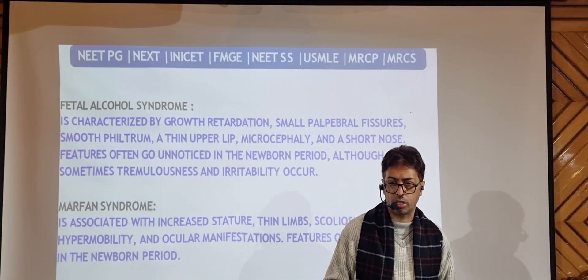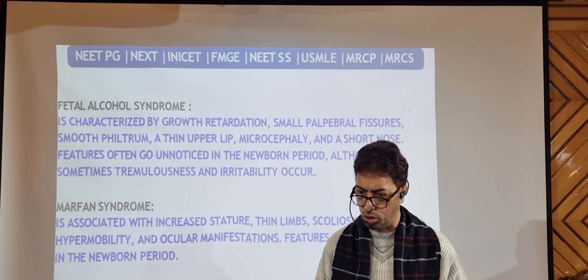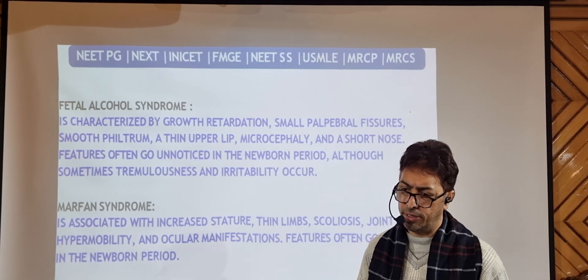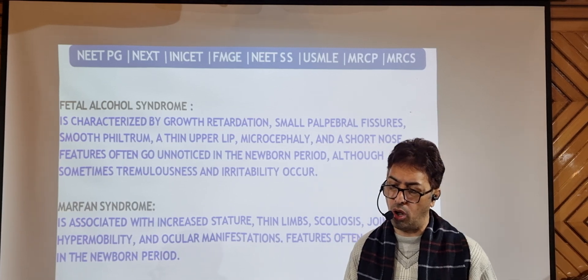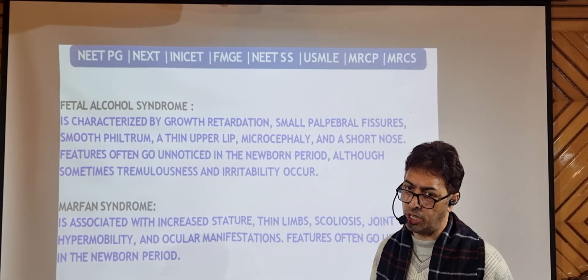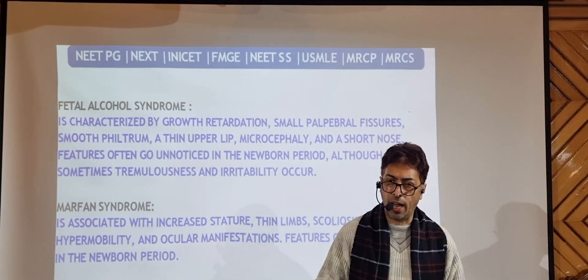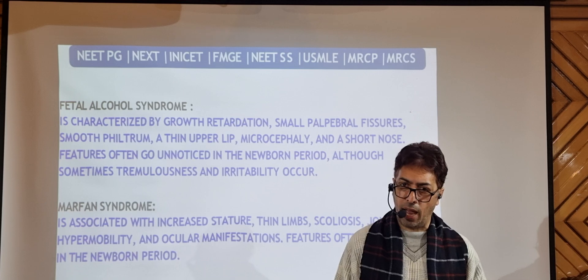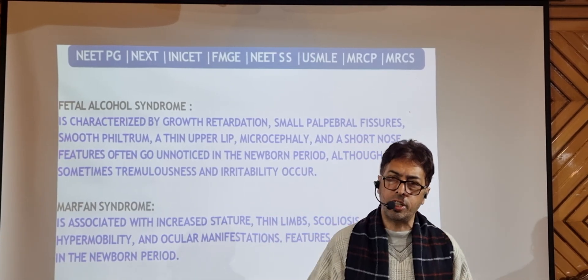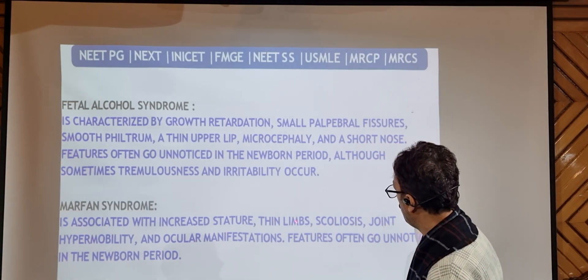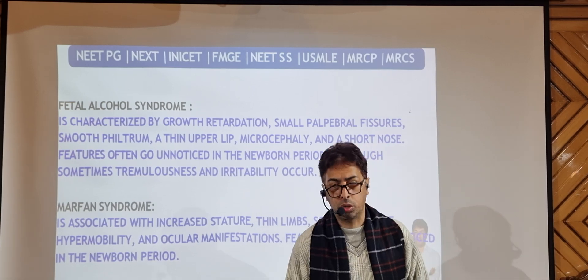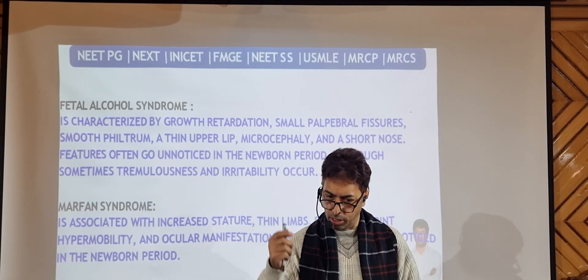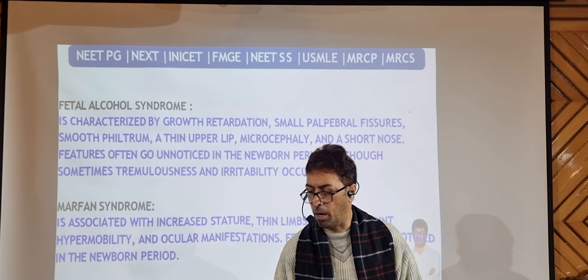Marfan syndrome is a classic connective tissue disorder frequently asked about. It is associated with a fibrillin defect. Patients can have high arched palate, scoliosis, joint hypermobility, and ocular manifestations in the form of dislocation of the lens. Other features include a long arm span, tall stature, and cardiovascularly — mitral valve prolapse with a click on auscultation. Orthopedically, remember scoliosis, thin limbs, and increased stature. Down syndrome, Edwards, Patau, fetal alcohol syndrome, and Marfan syndrome are all important clinical entities.